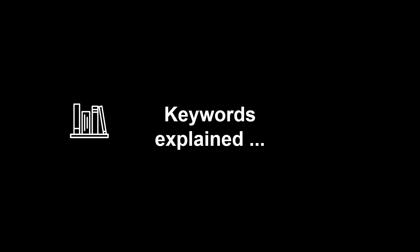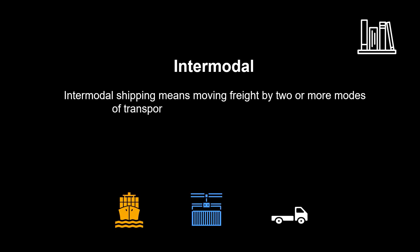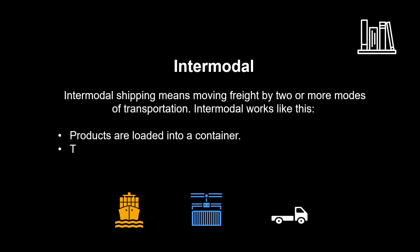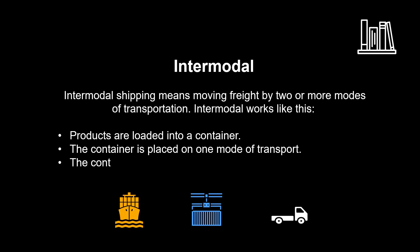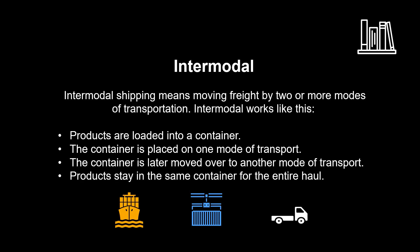Let us explain how intermodal and transloading differ. Intermodal shipping means moving freight by two or more modes of transportation. Intermodal works like this: products are loaded into a container, the container is placed on one mode of transport, the container is later moved over to another mode of transport, and products stay in the same container for the entire haul.